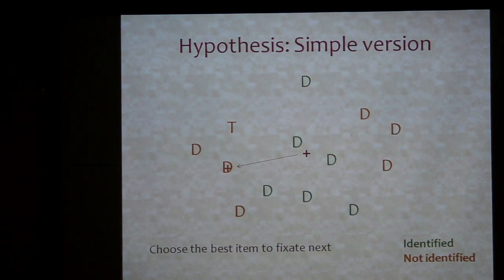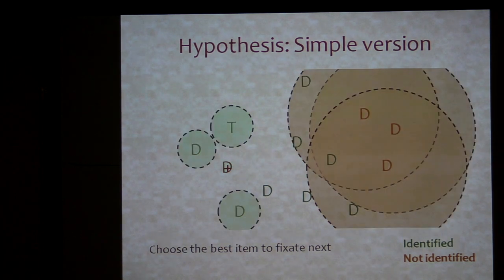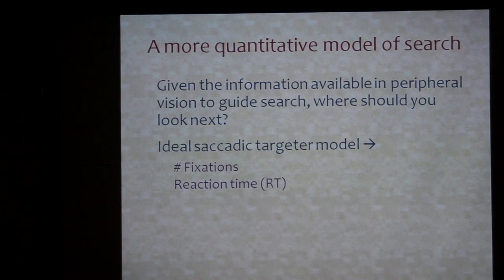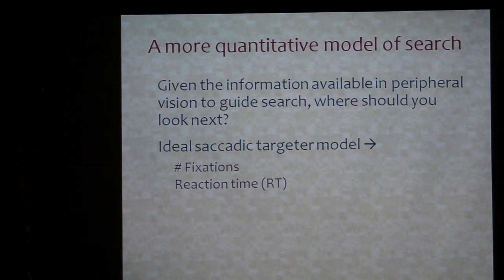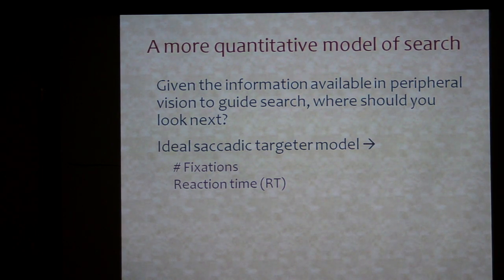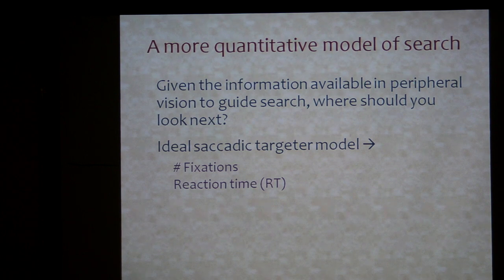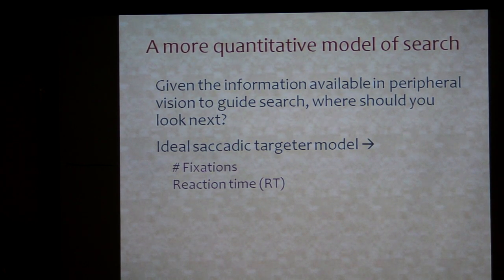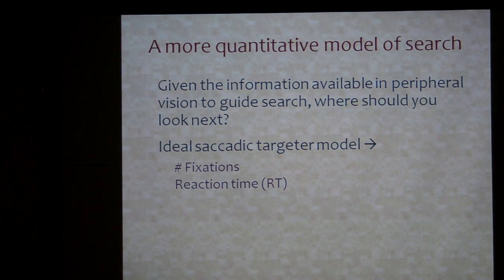Based on that, you go to one of the items you don't know about, assuming you didn't already see the target. You lay down the pooling regions again, and if a target wasn't crowded you know it's there. You continue until you find the target. You can take this information hypothesized to be available in the periphery — measured in the previous experiment as a statistical d-prime — and do a sort of ideal observer model for where someone should move their eyes next, try to predict the number of fixations, and see whether that matches what people actually do.